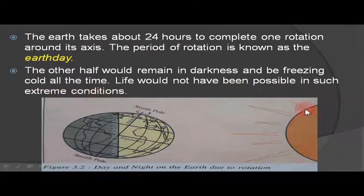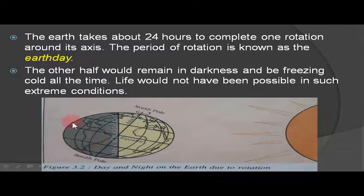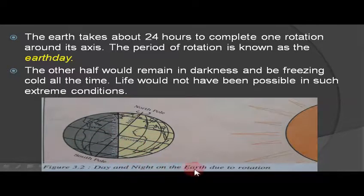As you can see, the sun is in the centre. Half of the earth facing the sun is daytime, and the back side facing away is nighttime. The person on the left side experiences night while the person on the right side experiences daytime. Day and night on the earth occur due to rotation.